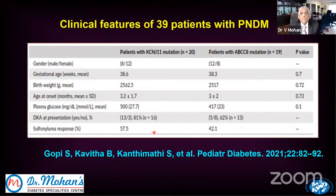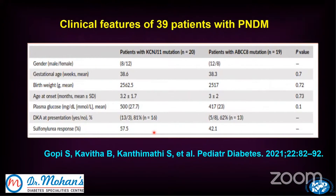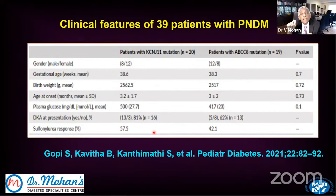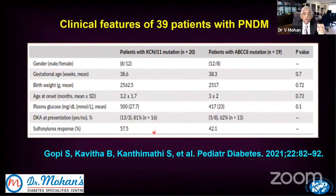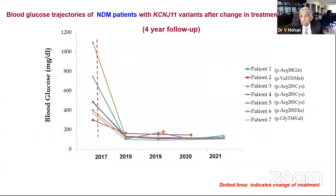An important caution: you cannot stop insulin in all children with diabetes diagnosed before six months without genetic testing — they may die. For example, the insulin gene (INS gene) mutation — where the insulin gene itself is mutated — will not respond to sulfonylurea; those children need insulin. So not all neonatal diabetes responds to tablets. You should do the genetic testing first to identify who can respond.